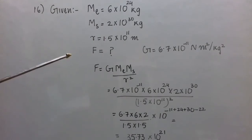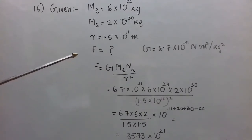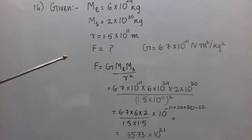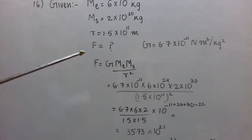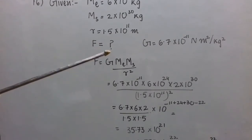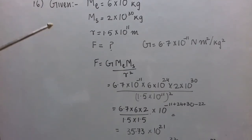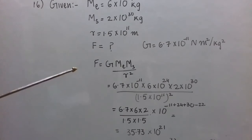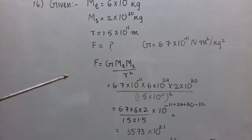We have to find the gravitational force F. Using Newton's universal law of gravitation, we need the value of capital G, which is approximately 6.7 × 10⁻¹¹ Newton meter square per kg square. Everything is in SI units. So F equals G·ME·MS divided by r square.